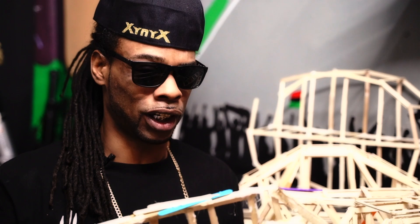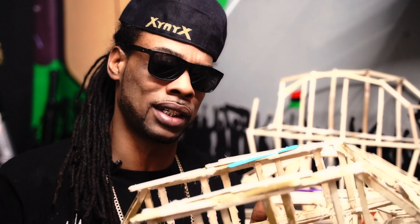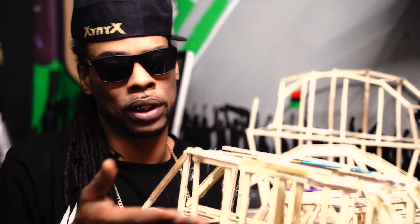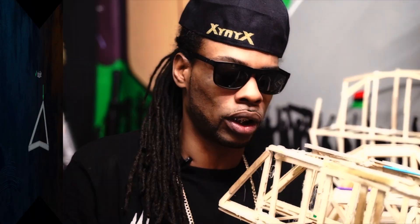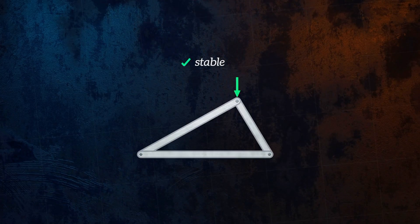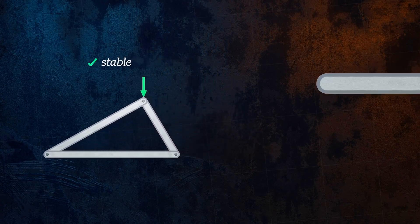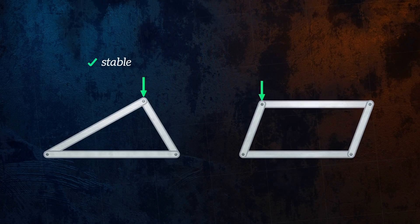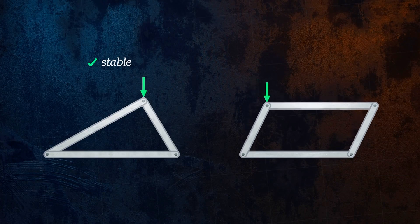We don't want that because that's what ends up being catastrophic failure. What we want is to control the way the force is actually being distributed through the legs of whatever structure we're working with. With a triangle, the weight put on top is added to the joint, which distributes the weight it has to bear to the legs — to the members.